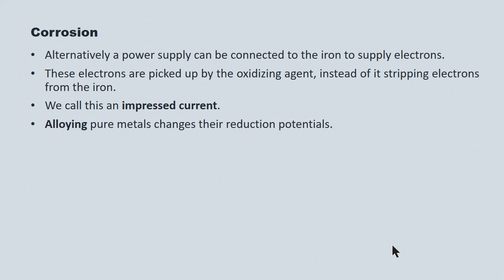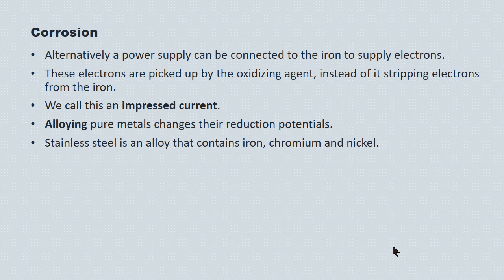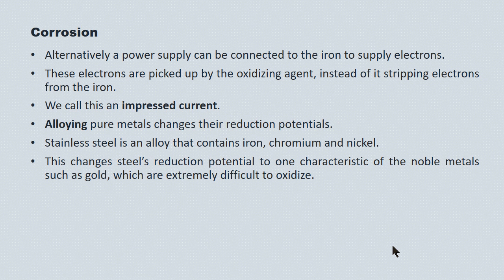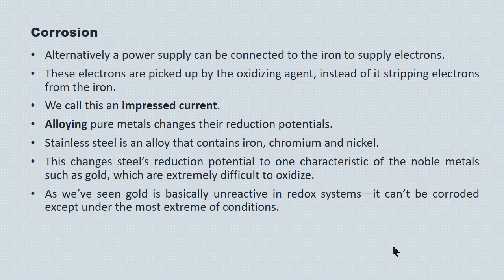Alloying is a method of mixing metals. We alloy pure metals to change their reduction potentials and improve their resistance to corrosion. Stainless steel, for example, is an alloy containing a mixture of iron, chromium, and nickel. It changes the steel's reduction potential to one characteristic of the noble metals — silver, gold, and platinum — which are extremely difficult to oxidize. To give steel the characteristics of a noble metal is to all but prevent it from ever being corroded. Gold, for instance, is virtually unreactive in redox systems and can't be corroded except under the most extreme conditions.